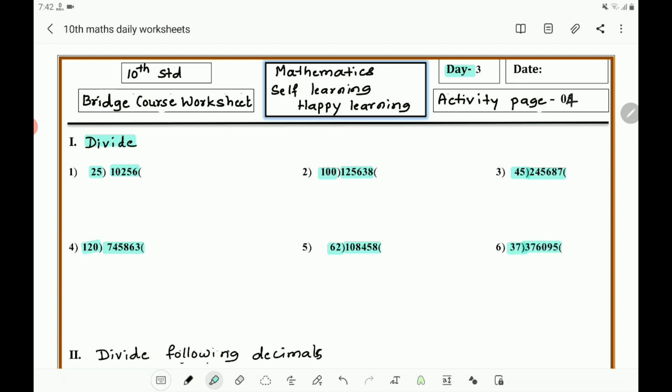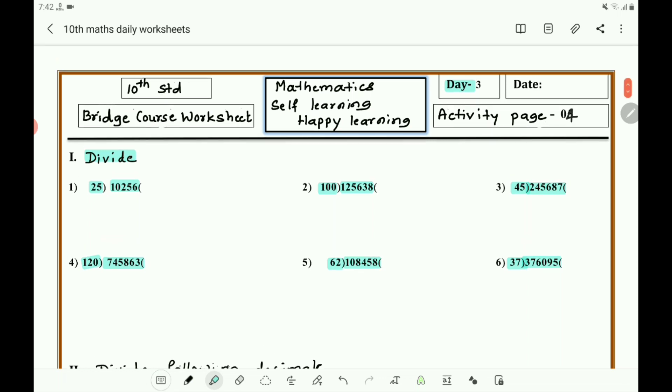You know the method of dividing. Let us take one example here. Take the example 10,256 divided by 25. Here you know that 1 is smaller, 10 is also smaller, so you must take 102.